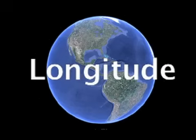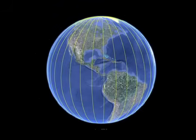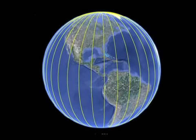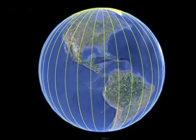The lines that run north and south are called meridians of longitude. These lines are measured the same way as parallels of latitude using degrees, minutes, and seconds.